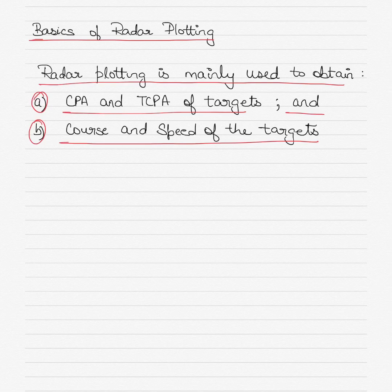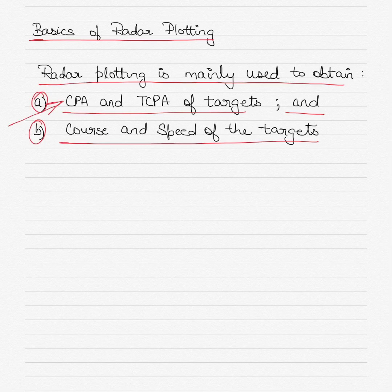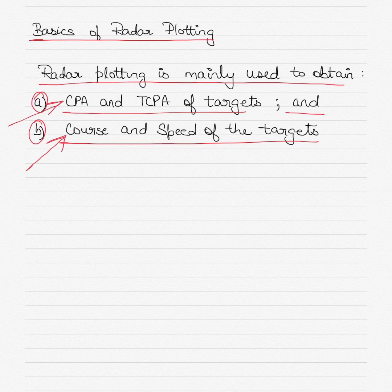Let's get started with the basics of radar plotting, and I hope to take up specific numerical examples and solve them together. Radar plotting is mainly used to obtain firstly the CPA and the TCPA of targets. CPA stands for closest point of approach and TCPA stands for time to closest point of approach. It is also used to get the course and speed of the target. When you are at sea, if you know this information, you have a good idea of how far or close you will be passing to the target, in what time, and whether it is safe for your ship to do so.